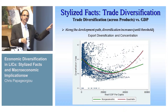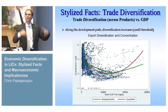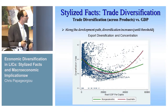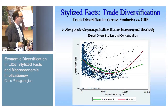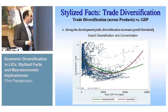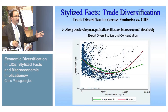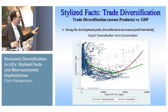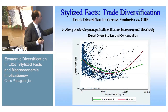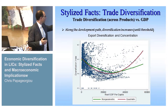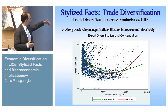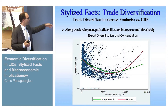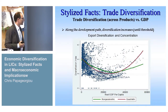It would be remiss not to replicate the trademark of this literature: the broad cross-sectional relationship between diversification and per capita GDP. This is work pioneered by Imbs and Wacziarg in the AER, which showcased this U-shaped relationship. The vertical axis is a diversification index — the lower the index, the greater the diversification — and the horizontal axis is per capita GDP.